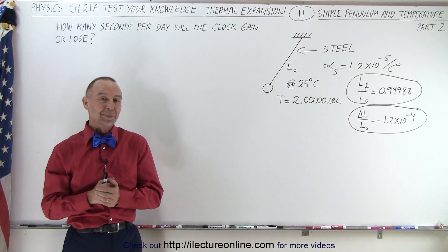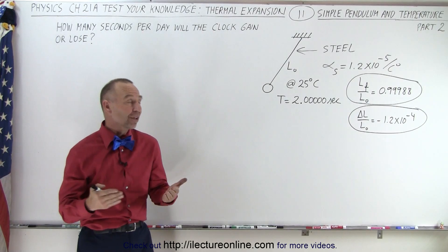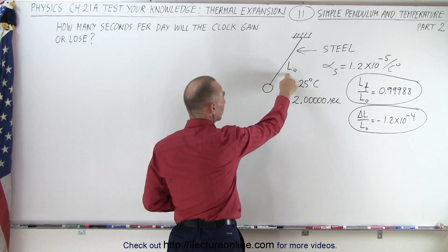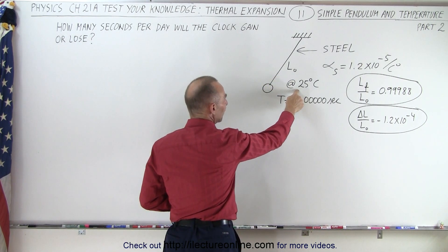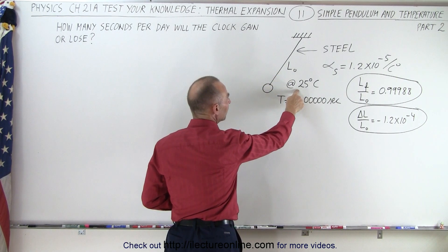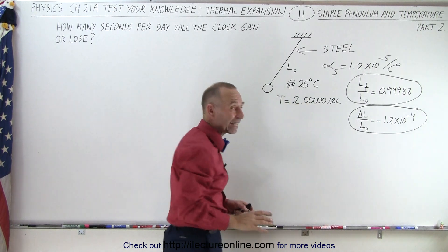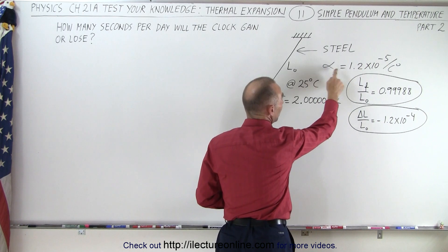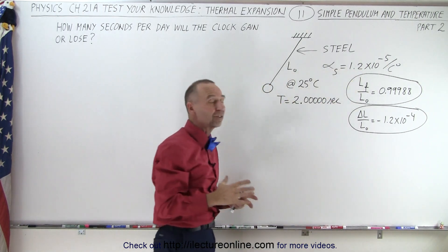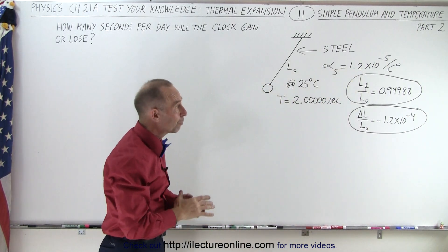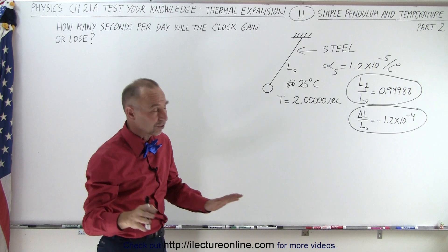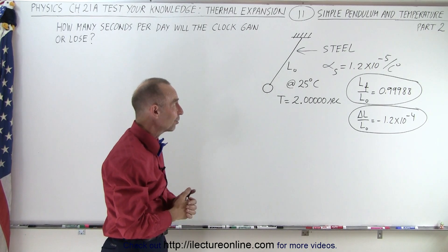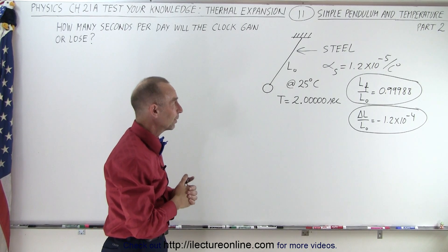Welcome to our lecture online. In the previous video we started with a pendulum that had a steel wire with some initial length at a temperature of 25 degrees centigrade. It had a period of exactly two seconds and steel has a linear coefficient of expansion of 1.2 times 10 to the minus 5 per centigrade degree. There are different kinds of steel with different coefficients, but let's take this one for this particular wire.